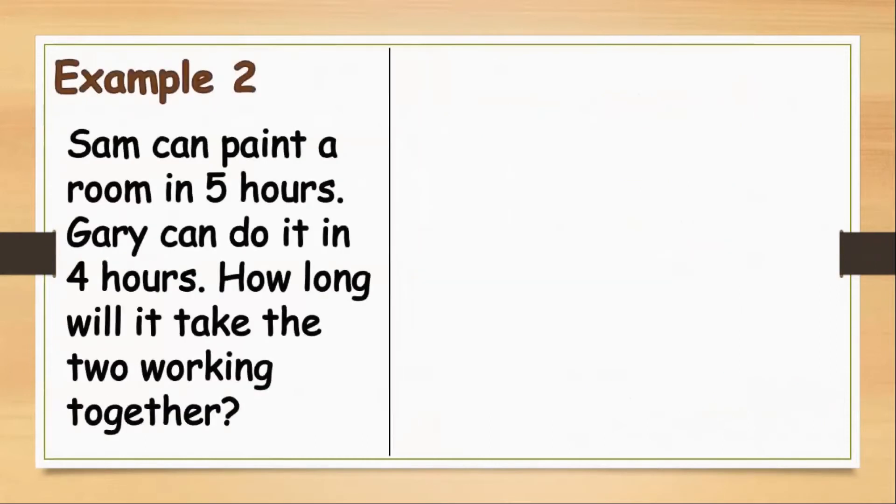Let's have our next example. Sam can paint a room in 5 hours and Gary can do it in 4 hours. How long will it take the two working together? So let's have our representations. Let 1/5 or 1 fifth will be the rate of Sam per day.